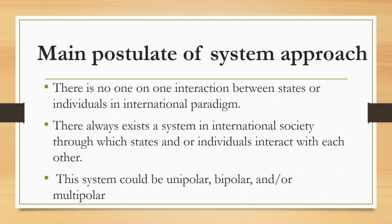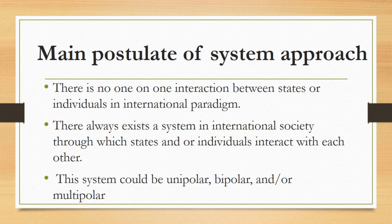First of all, what is the main postulate of the system approach to IR? According to the system approach, there is no one-on-one interaction between states or individuals in the international paradigm. But there always exists a system in international society through which states and/or individuals interact with each other. This system could be unipolar, bipolar, or multipolar. This approach stresses the importance of the international system and says that all matters of states are run through it.